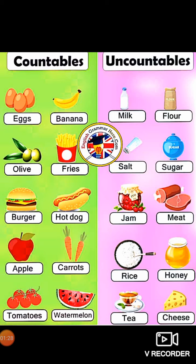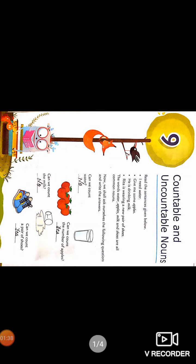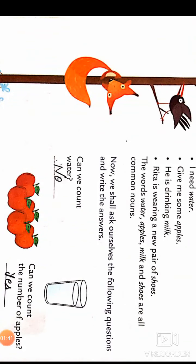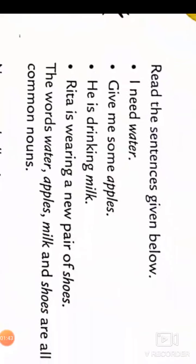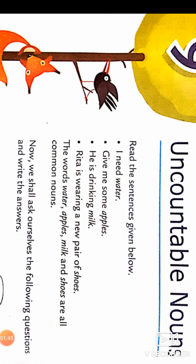These are uncountable. For example, if we say count the milk — how many drops of water are there? We don't know, we cannot count all of them. So these are the uncountable nouns.